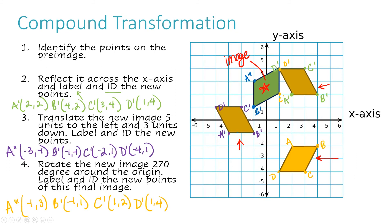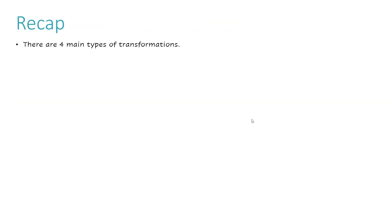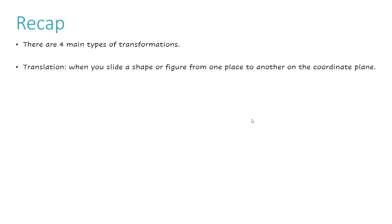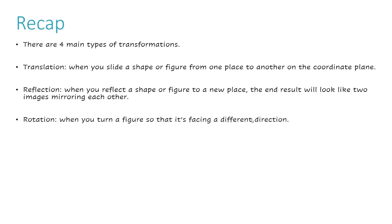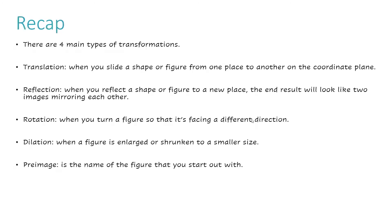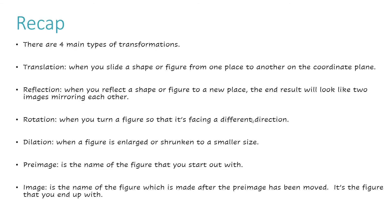Let's recap. There are four main types of transformations. A translation slides a shape from one place to another on the coordinate plane. A reflection reflects a shape to a new place — the end result looks like two images mirroring each other. A rotation turns a figure so it's facing a different direction. A dilation enlarges or shrinks a figure to a different size. A pre-image is the figure you start with; the image is the figure you end up with after the transformation.